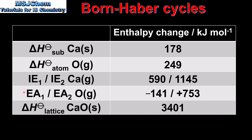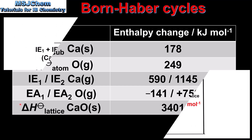After that we have the first and second electron affinities of oxygen. As we can see the first electron affinity is exothermic, but the second is endothermic. And finally we have the lattice enthalpy of calcium oxide. So next we will input these values into the Born-Haber cycle.